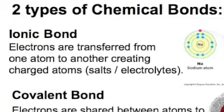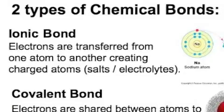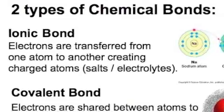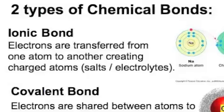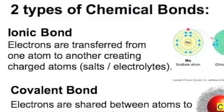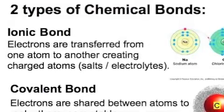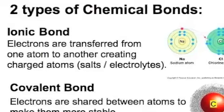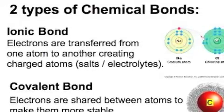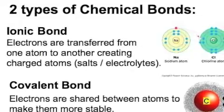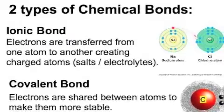In an ionic bond, electrons are transferred from one atom to another. This will create charged atoms. And in our body those are salts or electrolytes. So they will be helpful when we have to have electrical energy generated in our body. We'll use that for that.